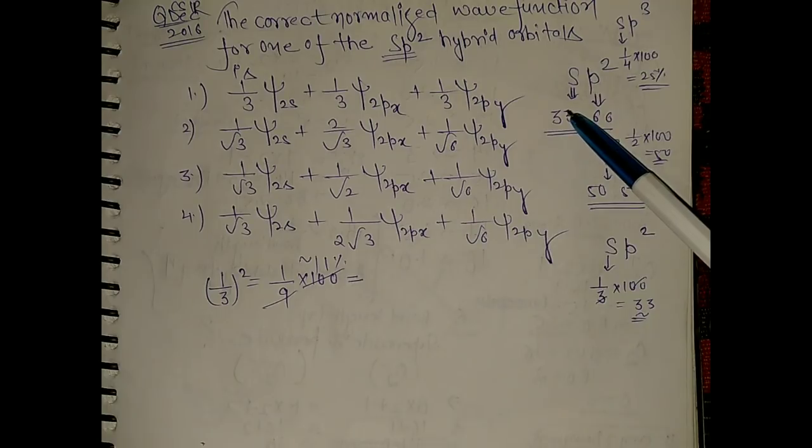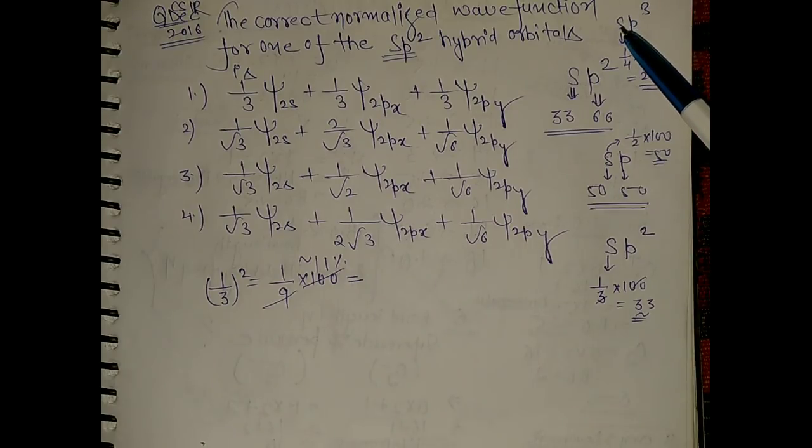And same for the sp3, these are 3 plus 1, 4 orbitals. So those who don't know, by this way we calculate the percentage of s and p characters.